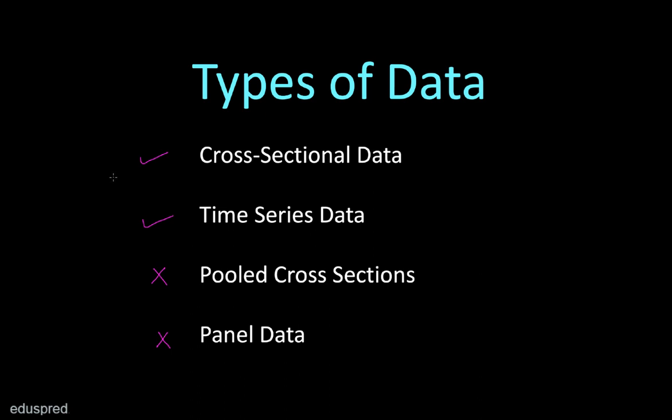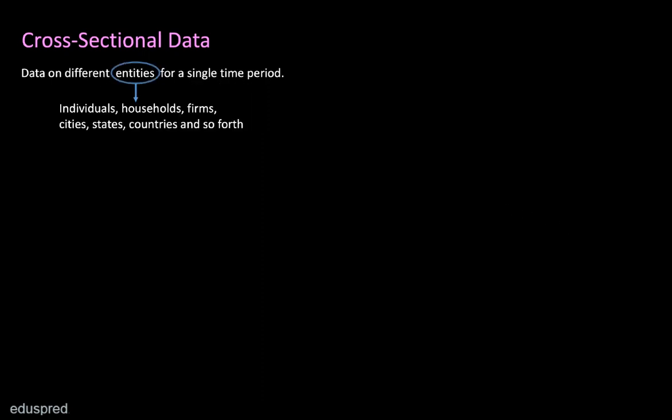Let's understand what we mean by cross-sectional data. Cross-sectional data is data on different entities for a single time period. There are three things to discuss here. The first is the meaning of entities. Entities could be individuals, households, firms, cities, states, countries, and so forth.